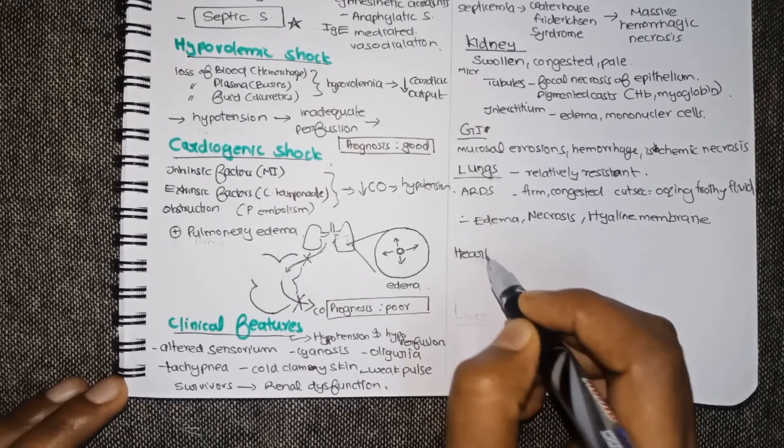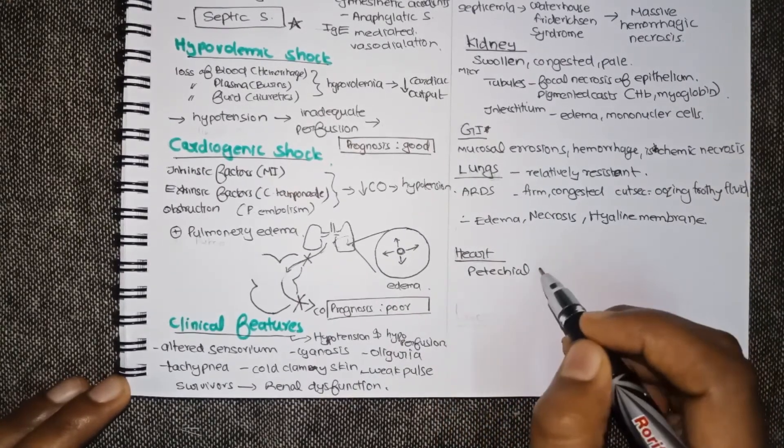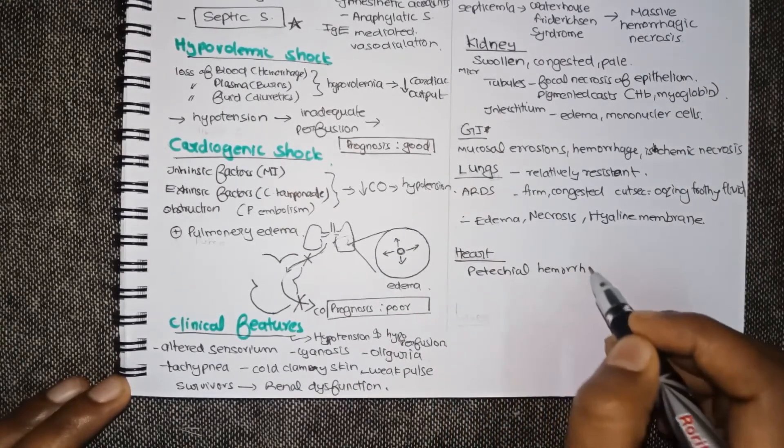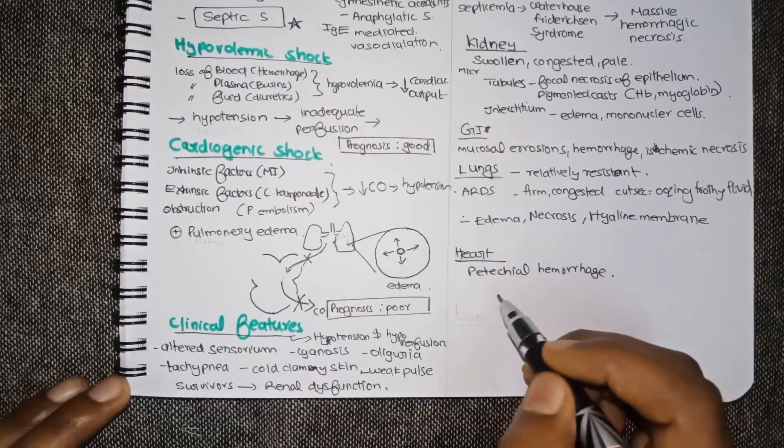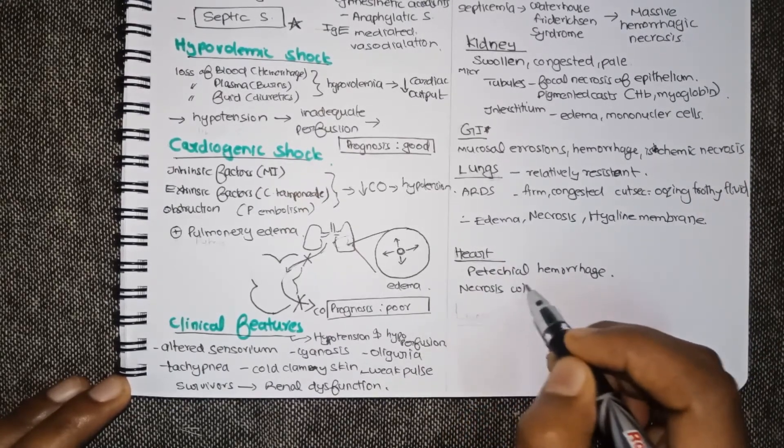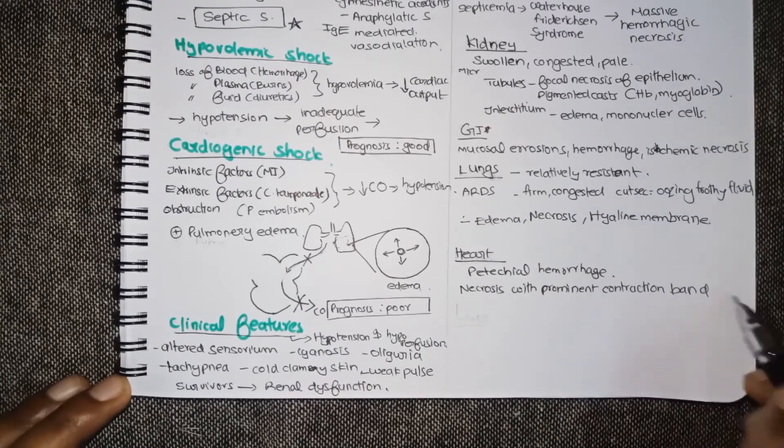Coming to the heart there will be petechial hemorrhage on epicardium and endocardium. The necrosis seen in the myocardium have prominent contraction bands.